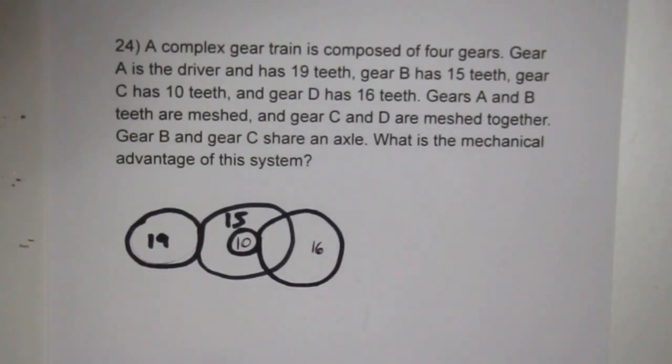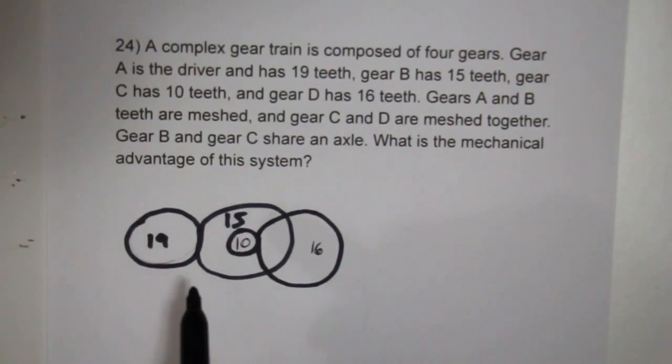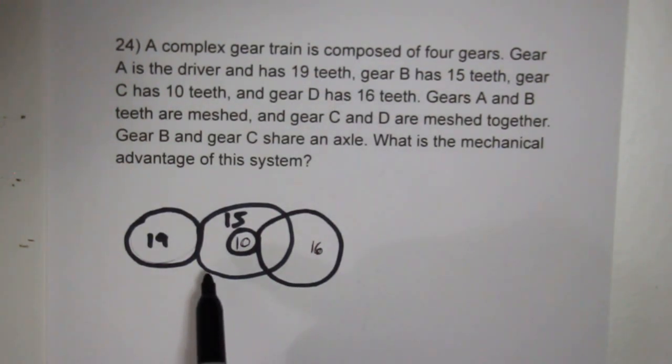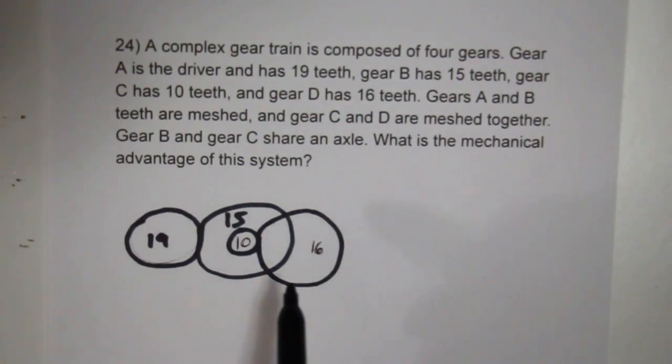Consider a complex gear train composed of four gears. Gear A has 19 teeth connected to gear B, which has 15 teeth. Gear C has 10 teeth, while gear D has 16.